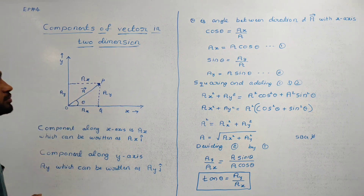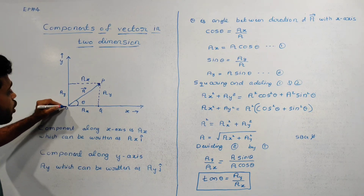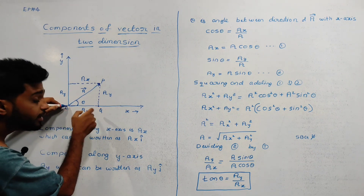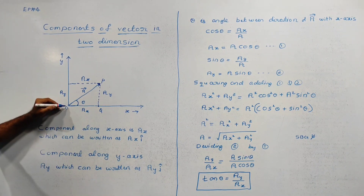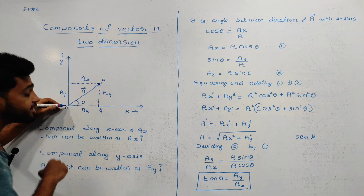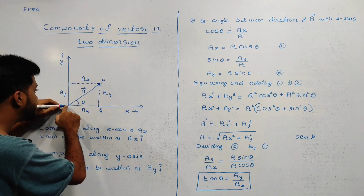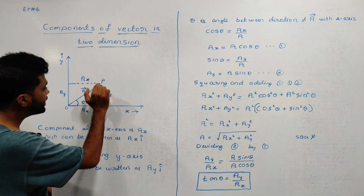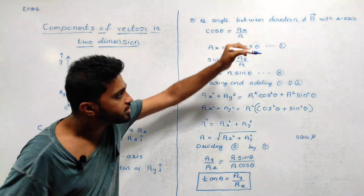From triangle OPQ, cos theta is equal to OQ divided by OP. OQ is Ax and OP is the magnitude of vector A. So, cos theta equals Ax divided by A. Therefore, Ax is equal to A cos theta. This is equation number 1.